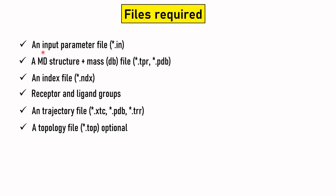The different input files required for the MMPBSA program are: the input parameter file with extension .in, the MD structure and mass DB file with extensions .tpr and .pdb, an index file, the receptor and ligand groups, and the trajectory file with extensions .xtc, .pdb, and .trr. The topology file (.top) is optional.